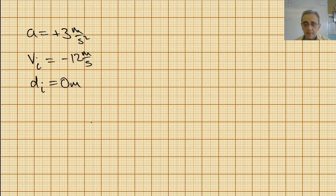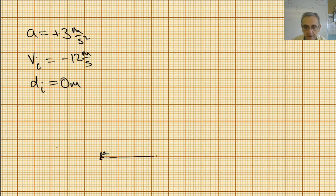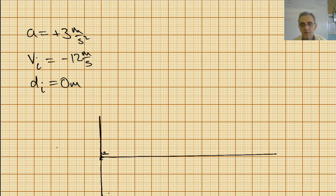Let me start off by drawing my horizontal axis here. I'm having technical difficulties trying to draw a straight line with a ruler here, but that's my a in meters per second squared axis.